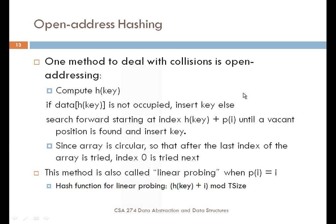In the last episode, we talked about open address hashing as a way to deal with collisions within a hash table. With open address hashing, basically the way it works is that you compute a hash value based on some key, and then you search to see whether or not the array element at that hash value is occupied. If it is, then you use a probing function to find a vacant position and insert the object at that location.